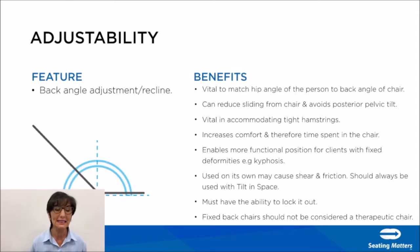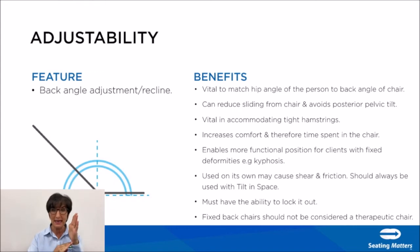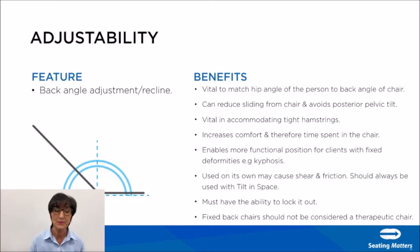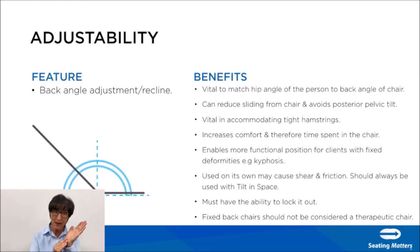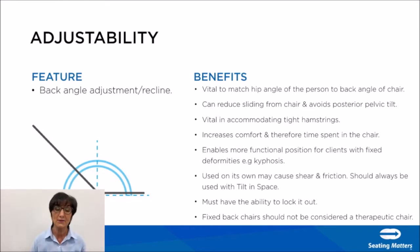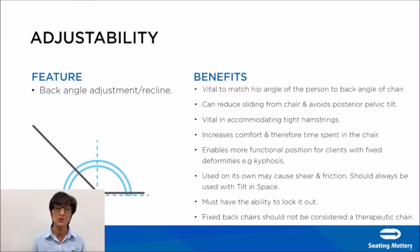The next feature is back angle adjustment. Adjusting the back angle to suit the hip angle is vital — opening out the back angle to match the hip angle reduces sliding and avoids posterior pelvic tilt. It is also vital to accommodate hamstrings, since the hamstrings cross both the hip joint and the knee joint. It enables a more functional position for clients with fixed deformities. However, used on its own it may cause shear and friction, so it should always be used in association with tilting space.